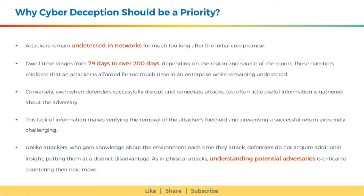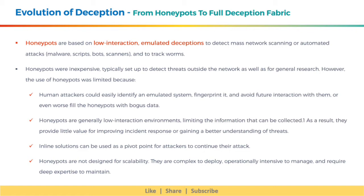Let's discuss the evolution of deception, moving from honeypots to full deception fabric. Honeypots are based on low interaction, emulated deceptions to detect mass network scanning or automated attacks like malware, scripts, bots, scanners, and to track worms. Honeypots were inexpensive, typically set up to detect threats outside the network as well as for general research. However, their use was limited: human attackers could easily identify an emulated system, fingerprint it, avoid future interaction, or fill the honeypots with bogus data. Honeypots are generally low interaction environments, limiting the information that can be collected, providing little value for improving incident response. Inline solutions can be used as a pivot point for attackers, and honeypots are not designed for scalability — they are complex to deploy, operationally intensive to manage, and require deep expertise to maintain.